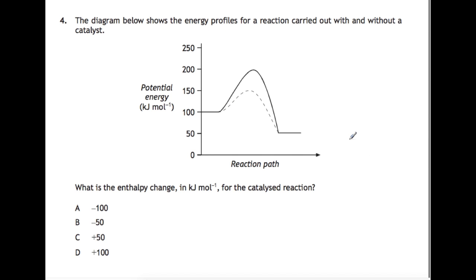Question 4. The diagram below shows the energy profiles for a reaction carried out with and without a catalyst. What is the enthalpy change in kilojoules per mole for the catalyzed reaction? Remember that for an enthalpy change we always do delta H is your products minus your reactants. So here's the products line, here's the reactants line. The products is 50 and the reactants is 100 and that is for a catalyzed or non-catalyzed reaction. So the answer is minus 50 which is B.